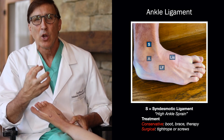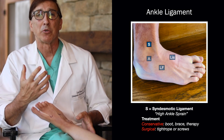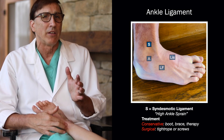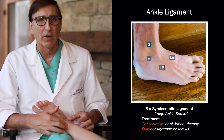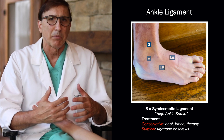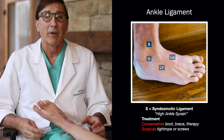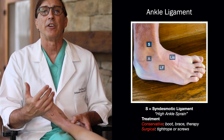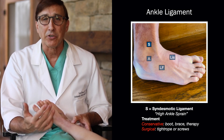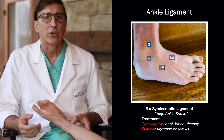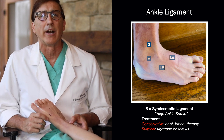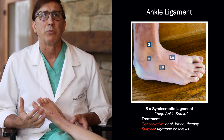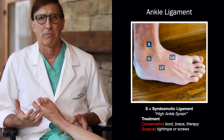It's a sprain or tearing of the ligament between the distal tibia, the big bone of the ankle, and the fibula, the smaller bone of the ankle — higher up than the typical ankle sprain. Usually they don't need surgery, though some athletes do to get back to athletics quicker. Usually we can treat these over time with just some therapy.